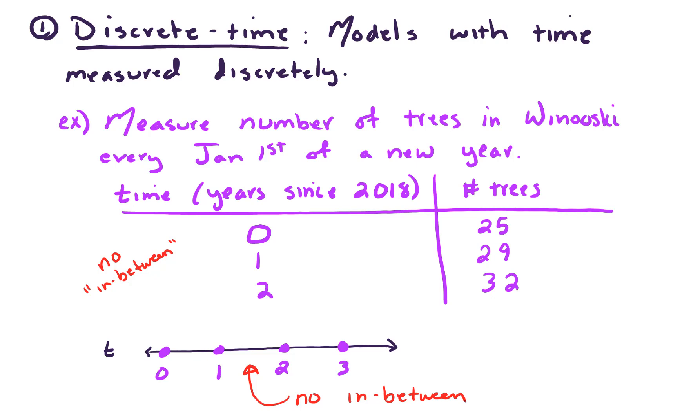We can imagine all sorts of other things like maybe every morning we look at the number of fruit flies in our kitchen, or we look at the number of sick people each morning in a hospital. So there are lots of situations where it makes sense to look at data discretely.